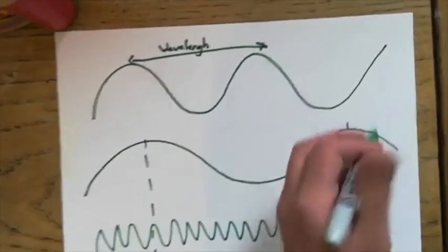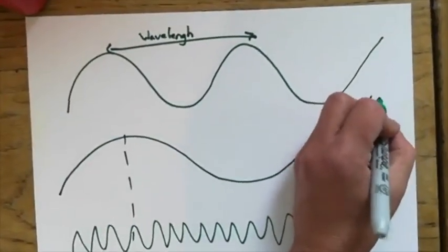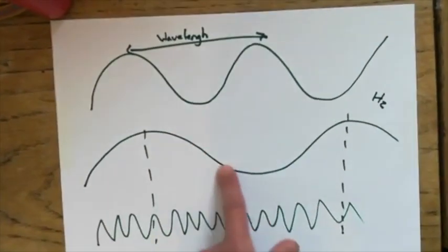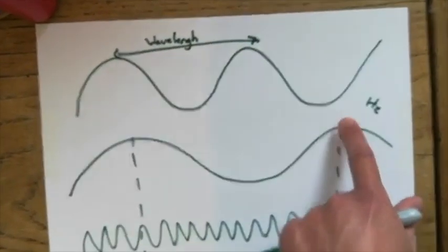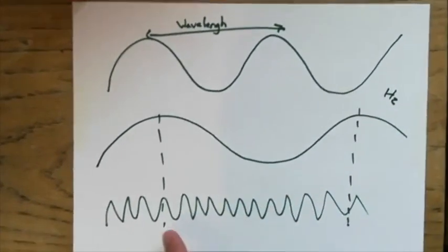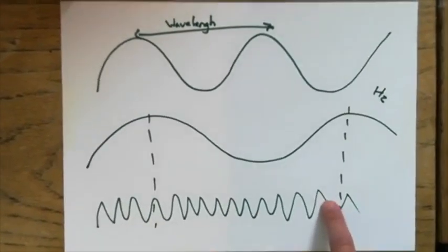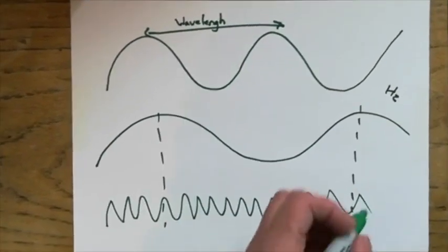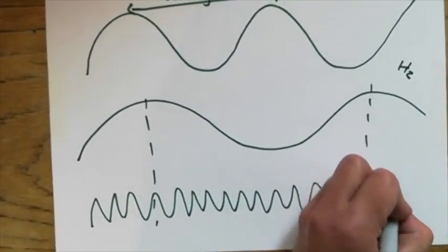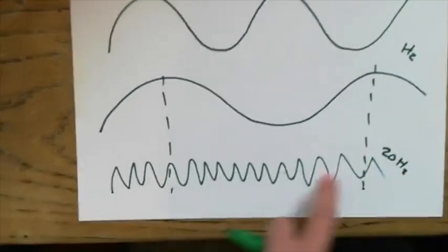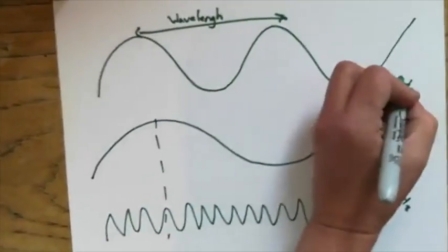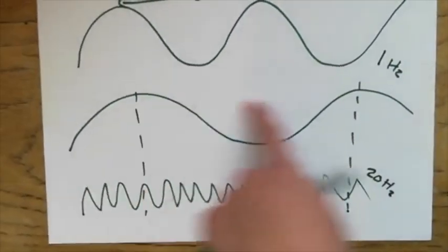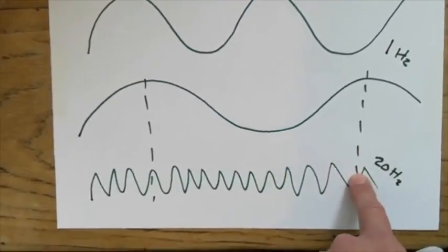You measure frequency in hertz — have you ever seen a capital H and a little Z? That's how you measure frequency. So if one wave travels past a point in one second, that frequency is one hertz. And if this wave has loads passing — let's say 20 — that wave is travelling at 20 waves per second. So the frequency of the first wave is one hertz, and the frequency of the second wave is 20 hertz.